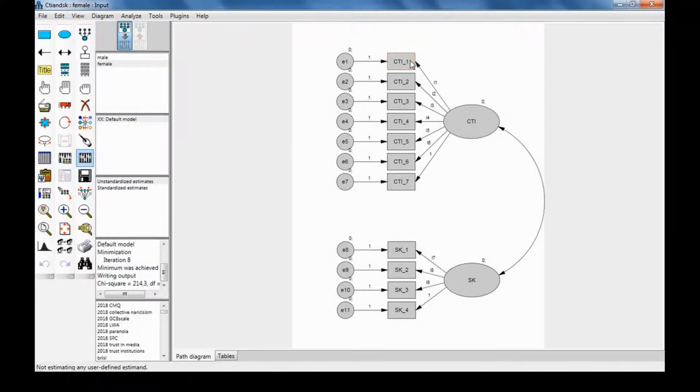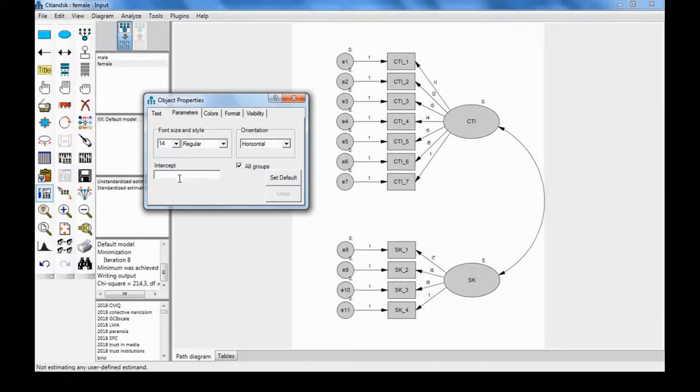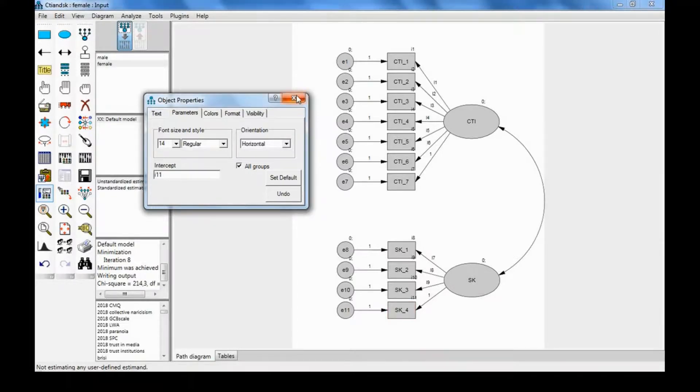And to constrain the intercepts to be equivalent for the two groups, we need to either right-click or double-click on the indicator items. And where it says Intercept, we're going to write the name for Intercept. We can go with I1, I2, I3, etc. Now that we have constrained the item intercepts to be equivalent for the two groups, we're going to click on Calculate Estimates.